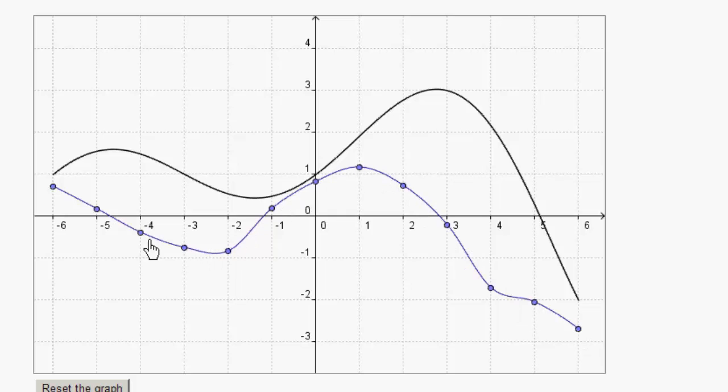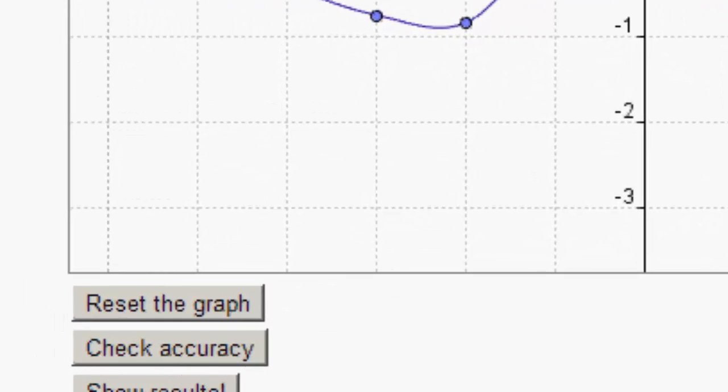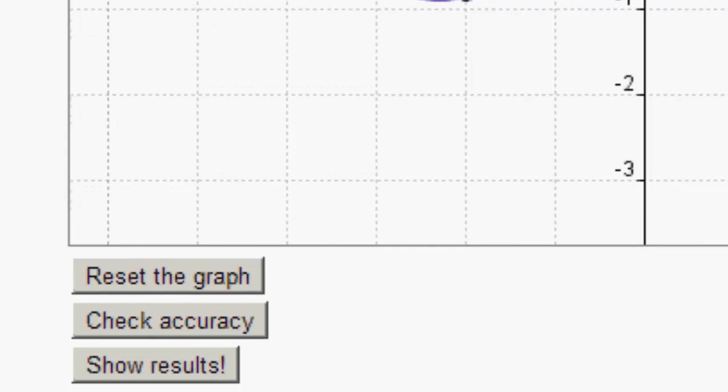Okay, so I set these up so all the y values on this represent the slopes on the original function f. So what you do is you'd go down to the bottom and you'd say check accuracy. Let me scroll down.